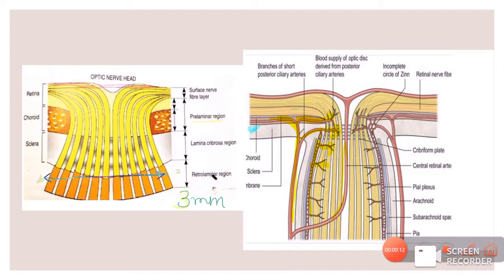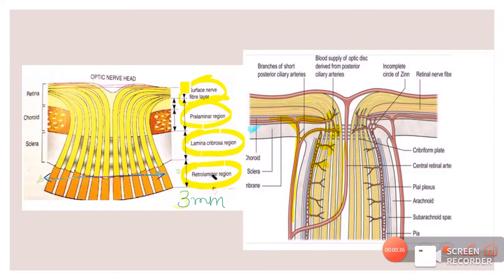As I already told you in my previous lecture on the anatomy of the optic nerve, the optic nerve is divided into four parts. The first part — the optic nerve head — is again divided into four parts: the superficial nerve fibre layer, the pre-laminar region, the lamina cribrosa region, and the retro-laminar region. Each part of the optic nerve head has a different blood supply. The surface nerve fibre layer gets its blood supply mainly from central retinal artery branches, while the pre-laminar and laminar cribrosa regions are supplied by the posterior ciliary arteries.